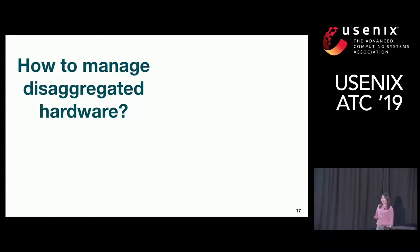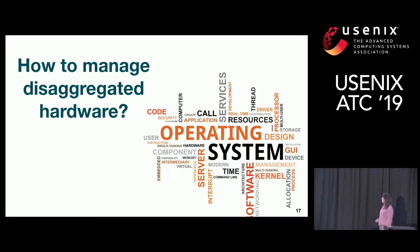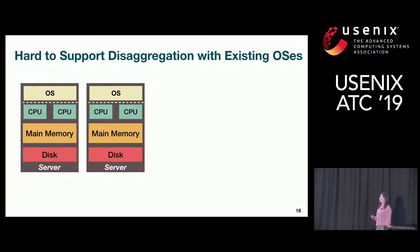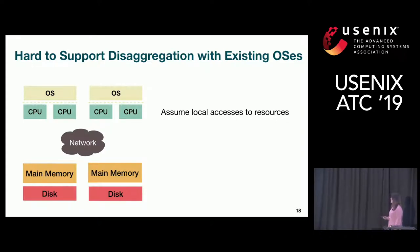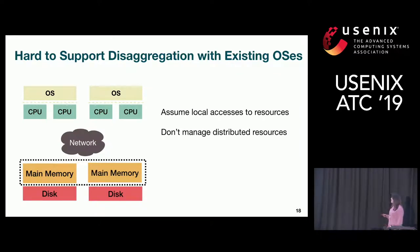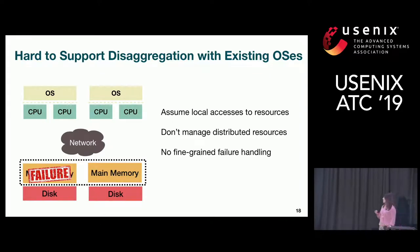The first question is: once we disaggregate hardware, what type of OS should we build? Can existing OSes work? Unfortunately, existing OSes were not designed for disaggregated resources and cannot handle a lot of issues well. Now a lot of resources are moving across the network, and traditional OSes do not handle these remote resources well. Not only are they remote, but they are also distributed, and there's no support for this low-level distributed resource. Existing OSes also do not handle fine-grained failure well.